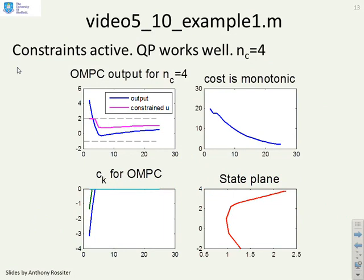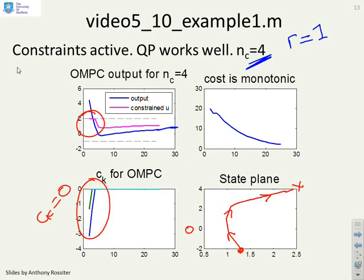So let's look at example 1. We've chosen N_c = 4 and applied the OMPC algorithm and we've set R = 1. We've not run this to settling but you can see the output is gradually moving to the correct target. You can also see that in the state evolutions. The states start here and move, and you see they're going to a position which is clearly not zero. So it's converging to a point which is not the origin. You can also see the constraint handling has taken place. The input is fixed at its limit for the first few samples and we have c_k not equal to zero. This code is demonstrating that applying the constraints using these inequalities has worked correctly. The cost is monotonic. Everything is as you expect.